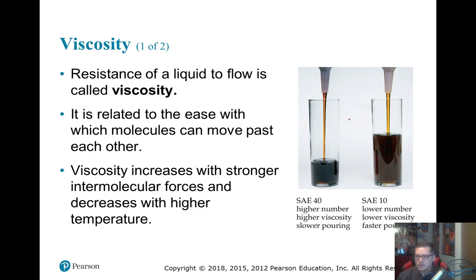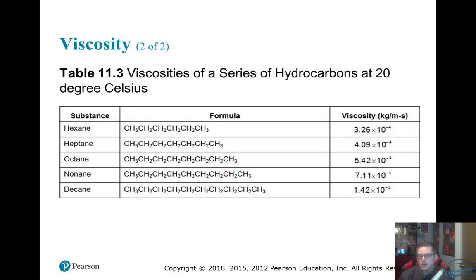So you've got these two pictures here of these two oils — you've got SAE 40, which has a high number of molecules, so it has a high viscosity and pours much slower. Both were poured in the same amount of time, but notice that SAE 40 filled up a lot less. Looking at hydrocarbons at 20 degrees Celsius measured in kilograms per meter-seconds: as you go from hexane (6 carbons) up to decane (10 carbons), mass increases, dispersion forces go up, and therefore viscosity increases as well.